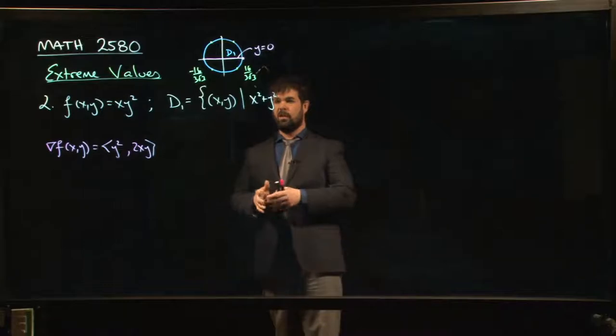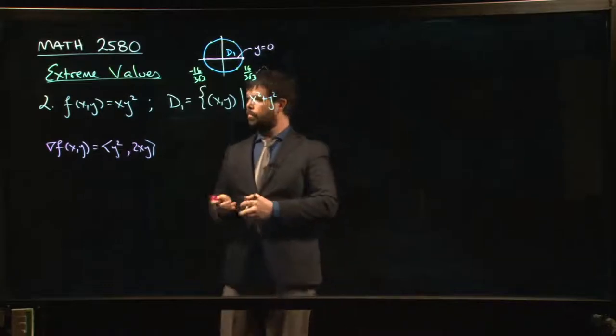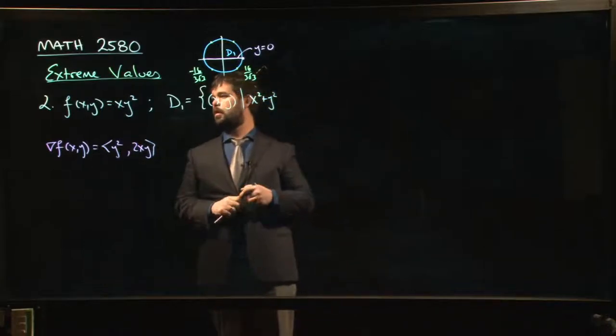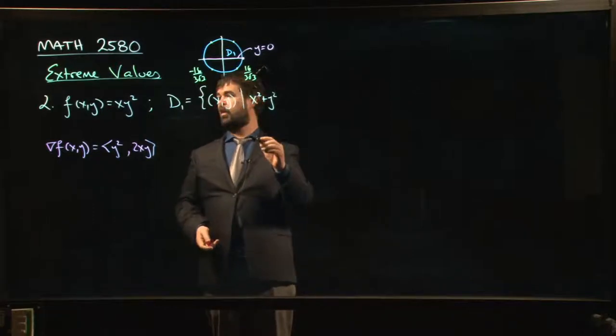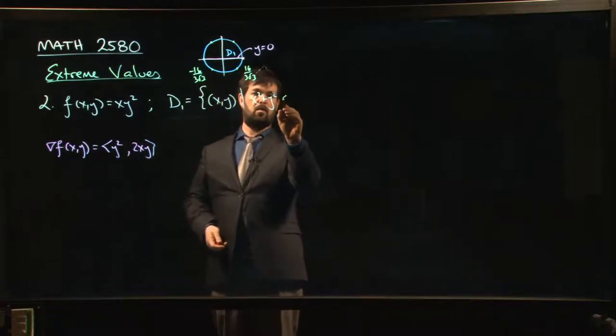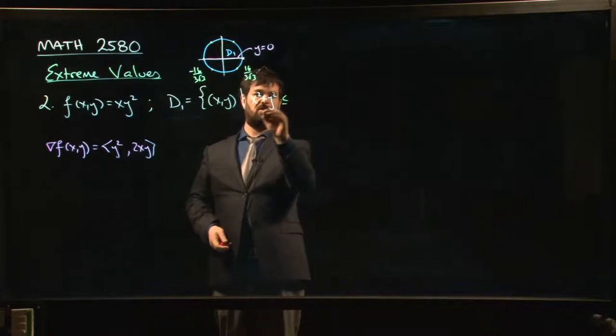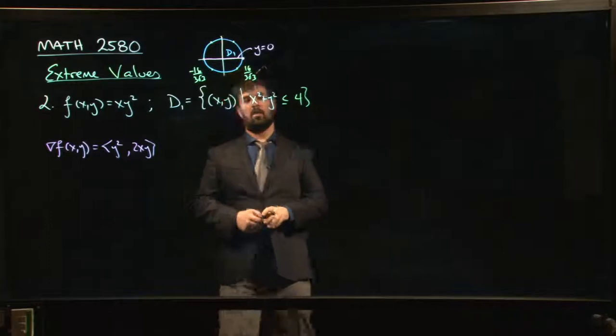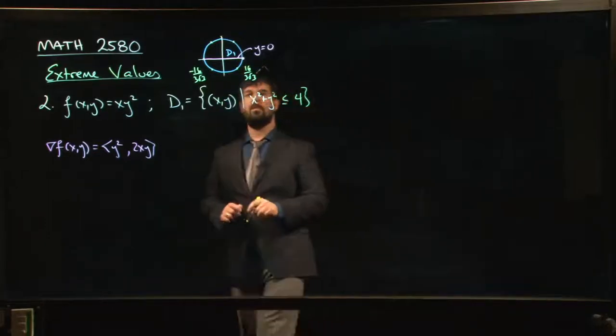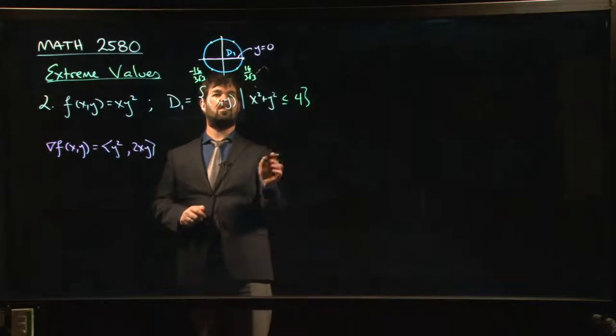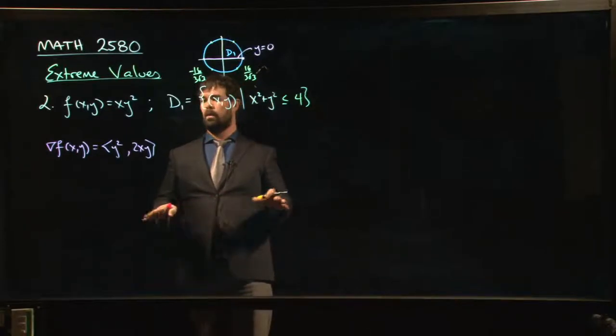All right, so we just did an example for this problem of finding the max and min values of this function, f of xy is x times y squared, over this region x squared plus y squared less than or equal to 4. We saw that one way to find the max and min values is first you look for critical points on the interior.